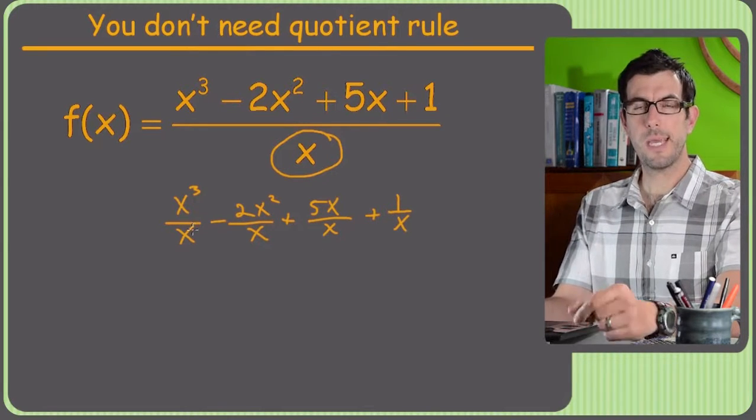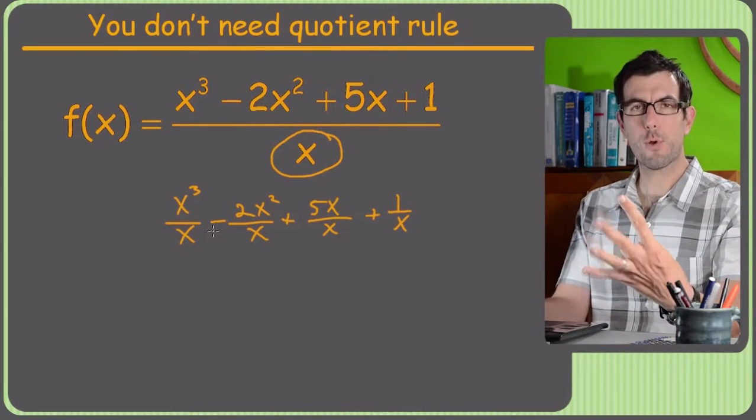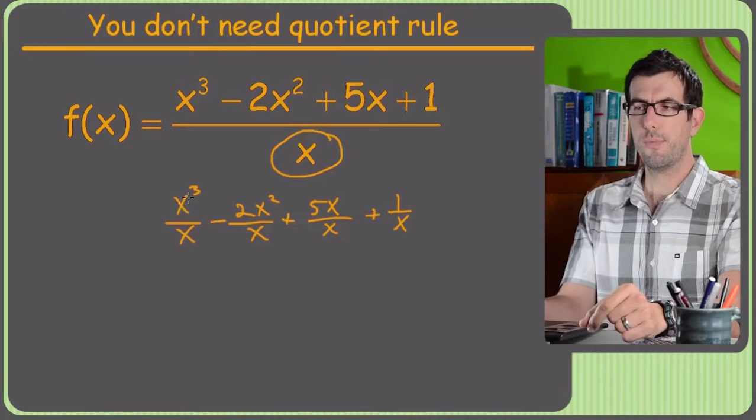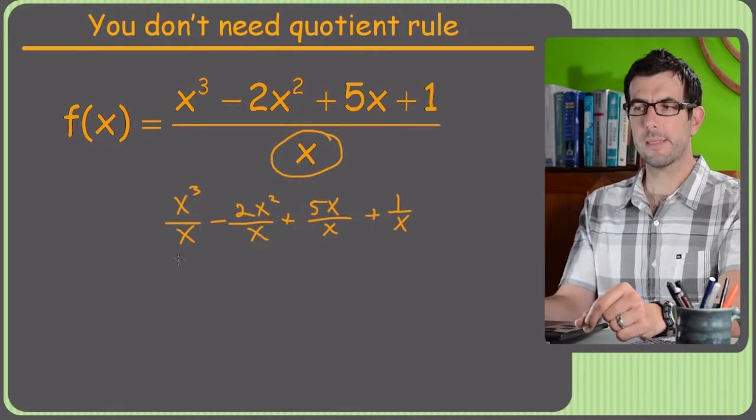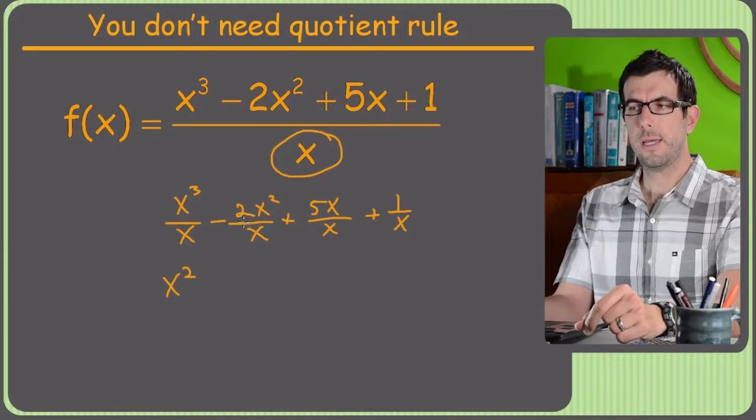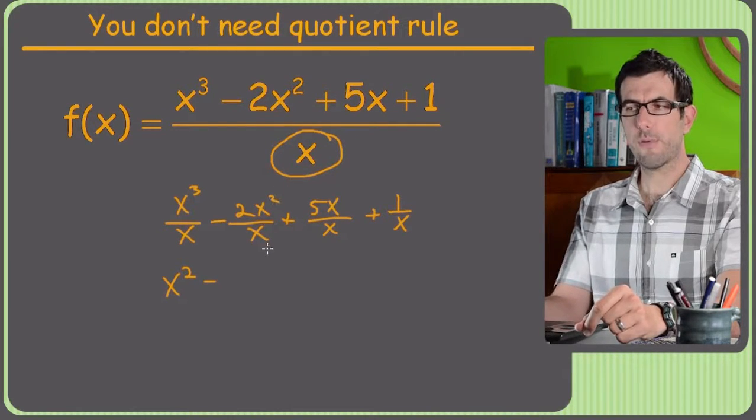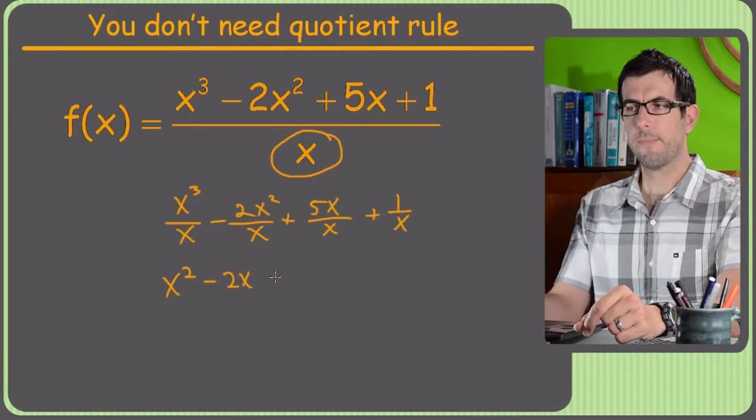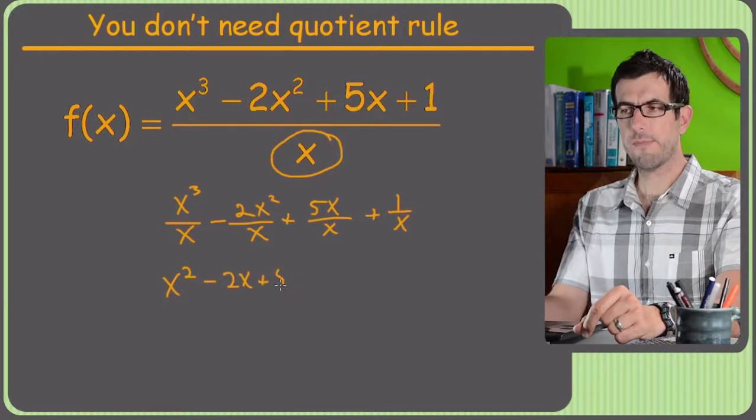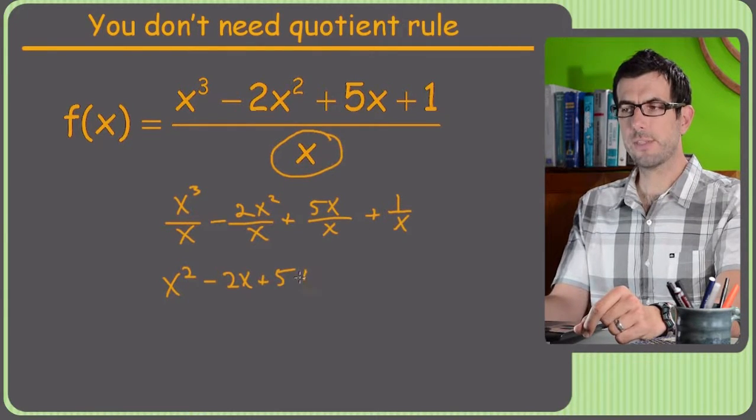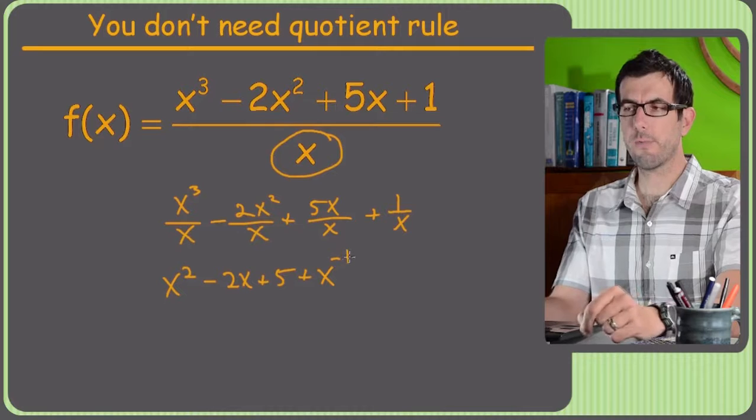And you might be asking me, hey Chris, why'd you do that? Because now you have four quotient rules. Well, now these are really easy to see, they cancel. x cubed over x is just x squared. Negative 2x squared over x is just negative 2x. 5x over x is just positive 5. And 1 over x is obviously just 1 over x, which is x to the negative 1.